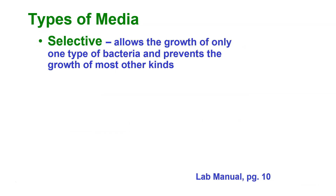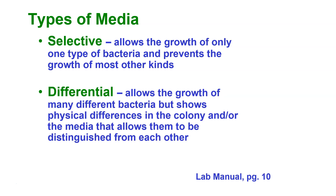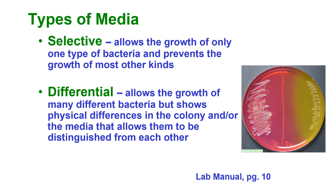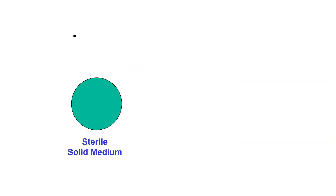Some media are selective — they allow the growth of only one type of bacteria and prevent the growth of most others. We also have differential media, which allows the growth of many different bacteria but shows physical differences in colony or media appearance that allow them to be distinguished. Looking at this plate, the bacterium on the right caused it to turn yellow while the one on the left did not — that is a visual, differential difference. This medium also happens to be selective, so we can have both differential and selective media.